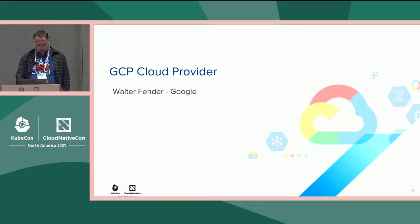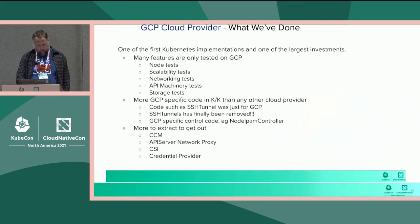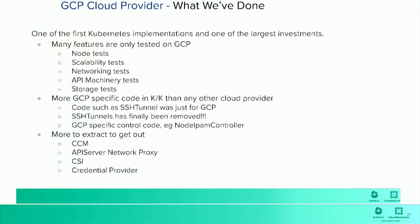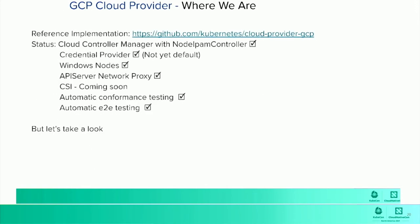GCP — that's me. Let's start with looking at where we've come from on GCP. GCP was one of the very first Kubernetes implementations, and as a result most of Kubernetes and GCP have been developed together. This means there's a lot of legacy code that is very tied to GCP, and also a large portion of our testing code base is tied to GCP. We have a cloud-provider-gcp implementation and it implements most, although not all, of the pieces needed. CSI is coming soon — I'm hoping it has been checked in at this point.